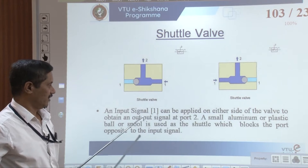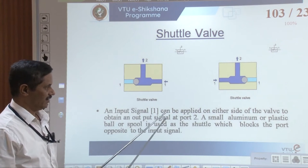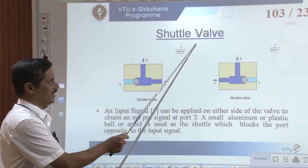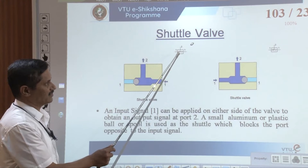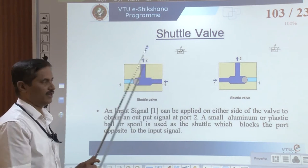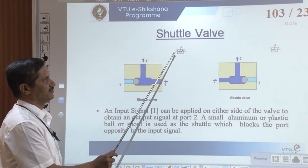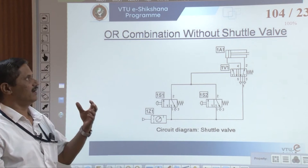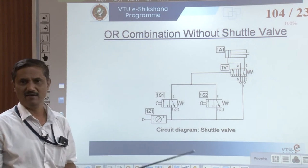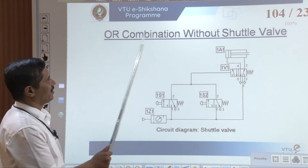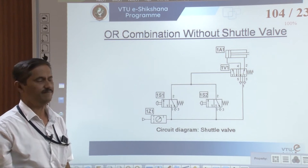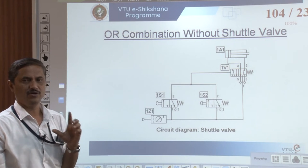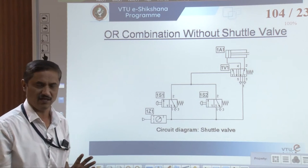The input signal can be applied on either side of the valve to get an output. Symbolically, the shuttle valve is represented as a small box with two umbrella-shaped symbols and a ball that floats to either side, indicating which is the input side and which is the output side. I will demonstrate the shuttle valve combination at circuit level — first showing how OR logic works without a shuttle valve, then using the shuttle valve to show how it improves the circuit.